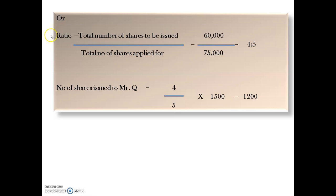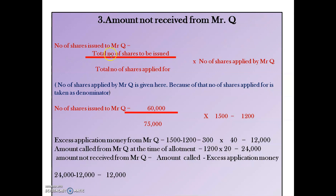Alternatively, using ratio: Total shares to be issued ÷ Total shares applied for = 60,000 ÷ 75,000. Multiply by shares applied by Mr. Q (1,500) to get 1,200 shares. Both formulas give the same answer: 1,200 shares issued to Mr. Q.